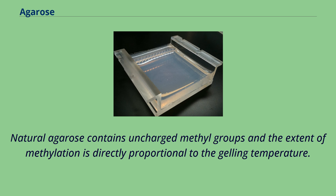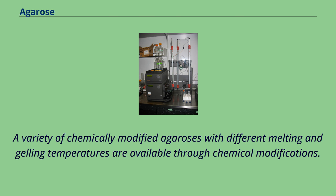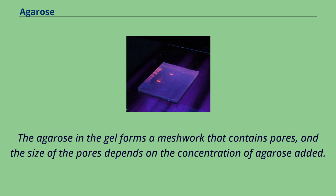Natural agarose contains uncharged methyl groups and the extent of methylation is directly proportional to the gelling temperature. Synthetic methylation, however, has the reverse effect, whereby increased methylation lowers the gelling temperature. A variety of chemically modified agaroses with different melting and gelling temperatures are available through chemical modifications. The agarose in the gel forms a meshwork that contains pores, and the size of the pores depends on the concentration of agarose added.